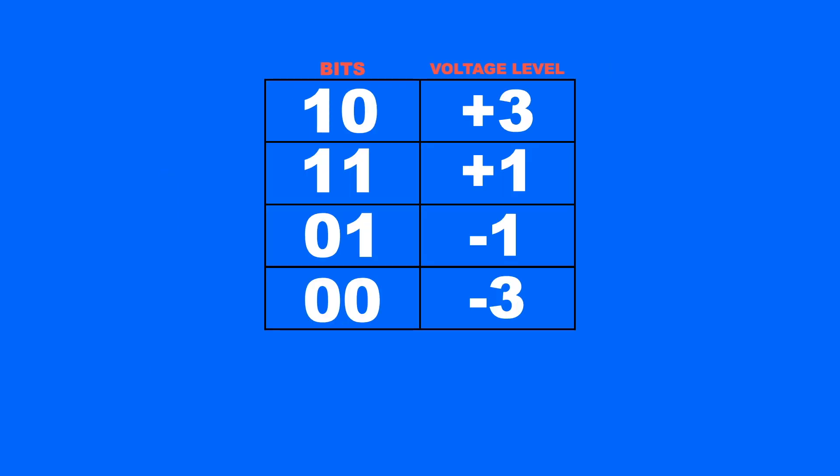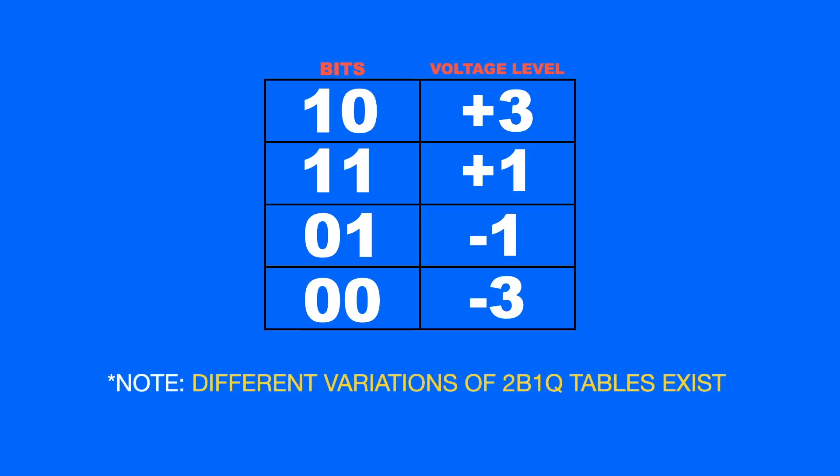So here we have a table for 2B1Q, and as you can see, two bits are represented as a single pulse. This sequence of bits would be encoded like this.